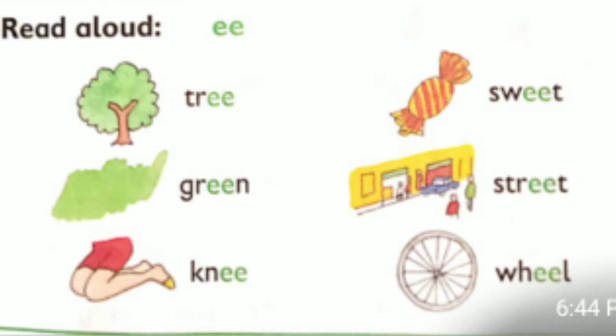Read aloud: double E — tree, green, knee, sweet, street, wheel.